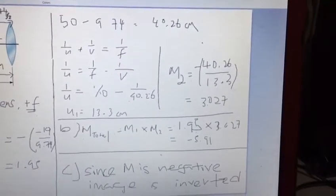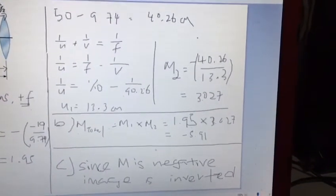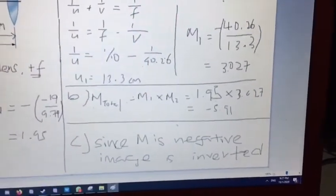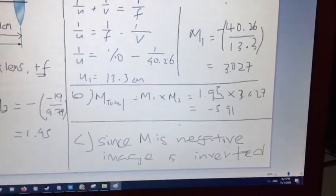We can use the magnification formula to find m2, which is 3.027. For part b, we can find the total magnification by multiplying m1 and m2.